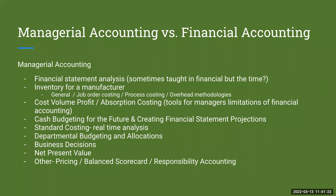The next part of managerial accounting is determining how inventory works for a manufacturer. The first step is generally determining what is cost of goods manufactured, then looking at job order costing, process costing, and different overhead methodologies. The next topic typically taught is cost-volume-profit and absorption costing. In this one, we are really separating our fixed costs and variable costs, trying to figure out how we break even, and how absorption costing can potentially distort information.